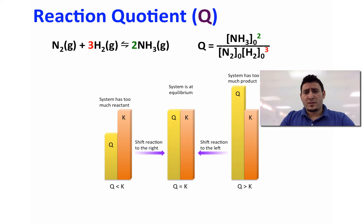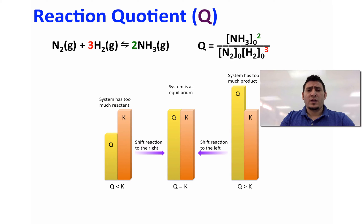Therefore, the system will shift to the left side to consume the product, and in order to reach equilibrium, Q will become equal to K.